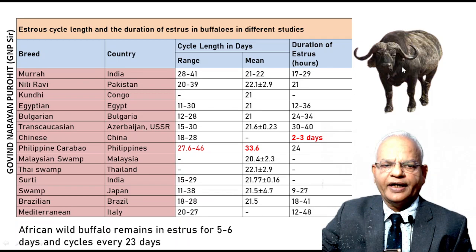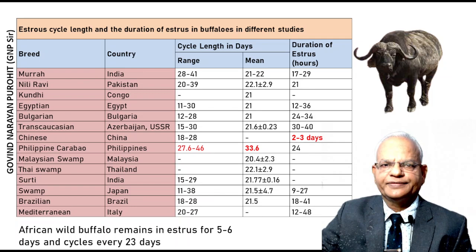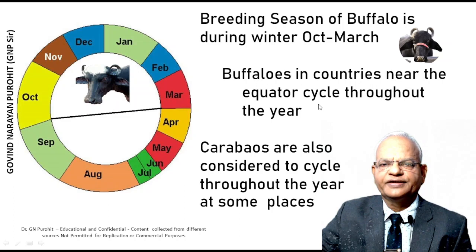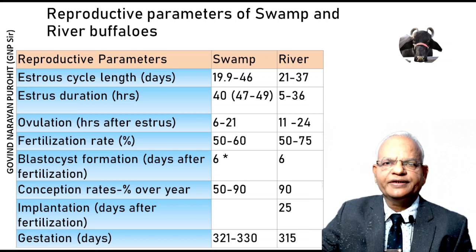The breeding season of buffaloes is during winter — October to March — in most countries where river buffaloes are kept. Buffaloes in countries near the equator, like Argentina, cycle throughout the year, but their cyclicity depends on the availability of fodder. Carabaos are also considered to cycle throughout the year in some places.